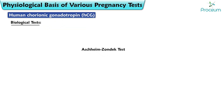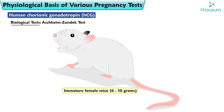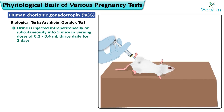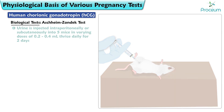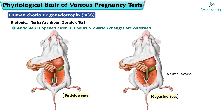Aschheim-Zondek Test: Immature female mice weighing 6 to 10 grams are used. The urine is injected intraperitoneally or subcutaneously into five mice in varying doses of 0.2 to 0.4 milliliters, thrice daily for two days. The abdomen is opened after 100 hours and ovarian changes are observed. A positive test is indicated by enlarged and hyperemic ovaries and the presence of recent corpus luteum.